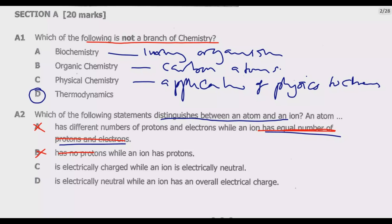Option C states an atom is electrically charged while an ion is electrically neutral — this is the opposite of the truth, so C is incorrect. Option D states an atom is electrically neutral while an ion has an overall charge — this is correct. An atom is neutral because it has equal numbers of protons (positively charged) and electrons (negatively charged), which cancel each other out. An ion is an atom or molecule that has lost or gained one or more electrons, giving it a net electrical charge. Therefore D is the correct answer.